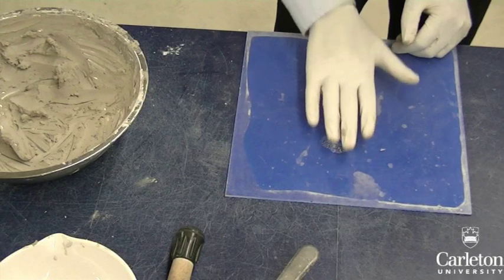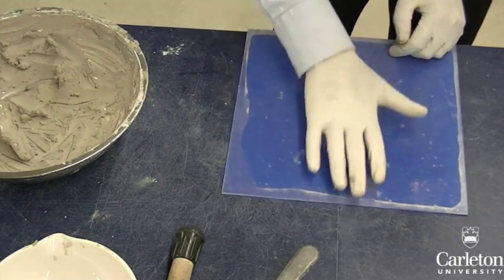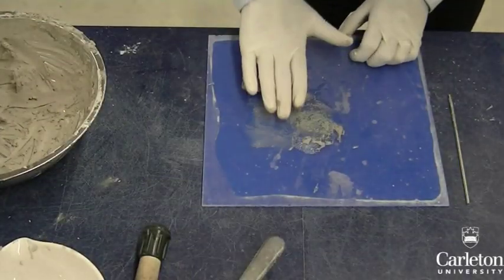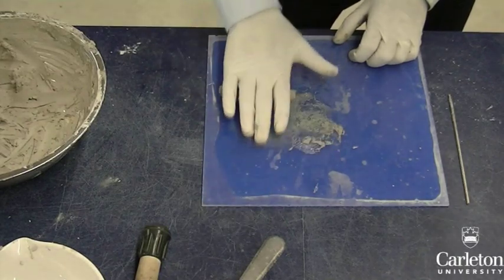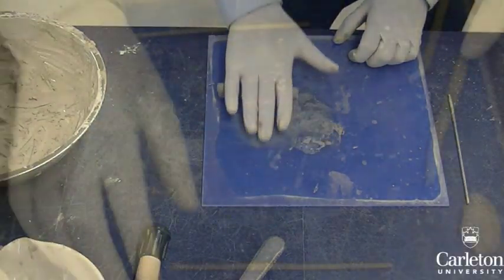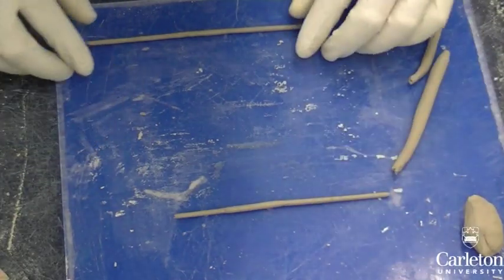The objective here is to continue rolling the sample until it thins to a diameter of 3mm. If your sample sticks to the flat surface as it is doing here, this means that your sample is too wet. You will need to place the sample back into the container, mix the soil to remove some of the moisture and try again.